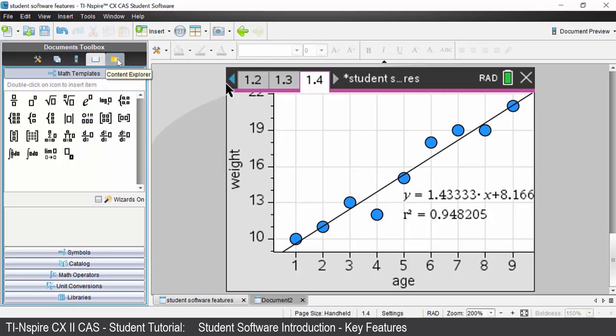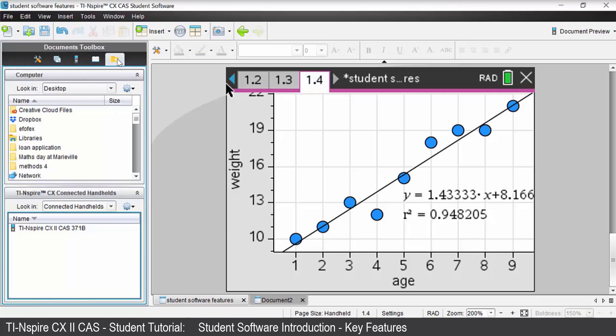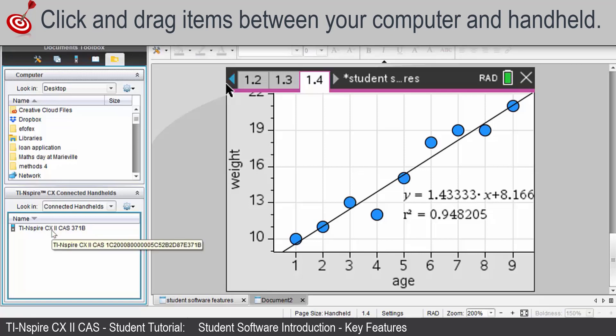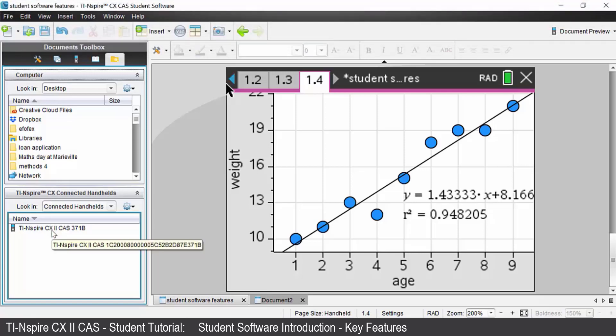The final icon is content explorer. The top part of your screen will list all of the files on your computer and the bottom screen will list all of the files on your handheld assuming that that is connected to your computer software.